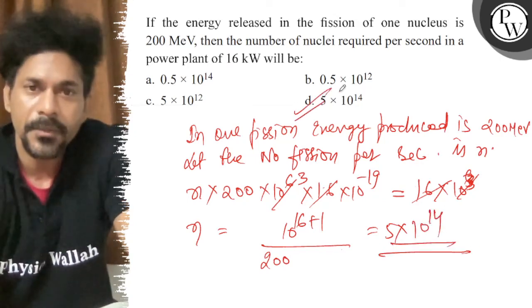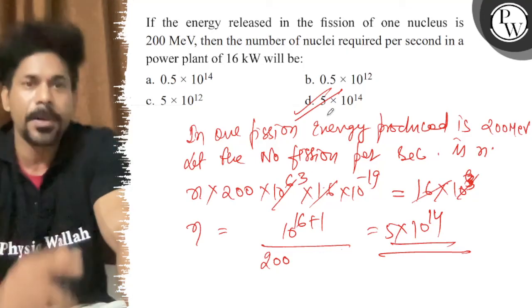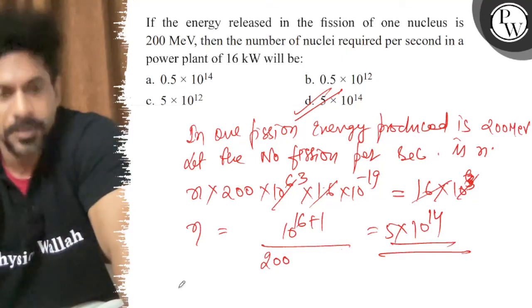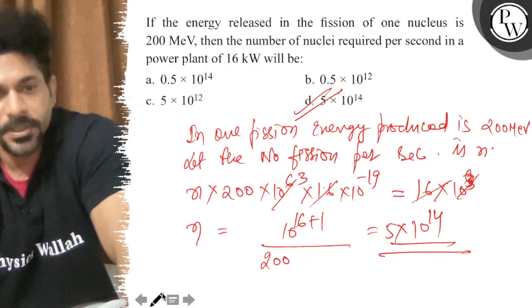That will be the number of fusions per second required to obtain the power of 16 kW for the plant. So, the right option for this question is D. All the best.